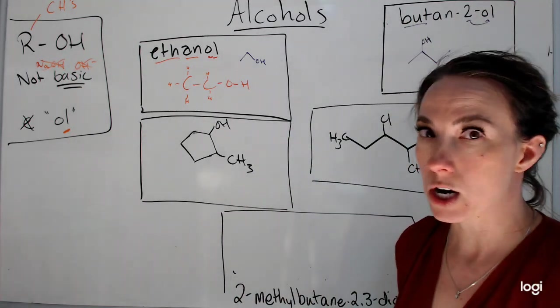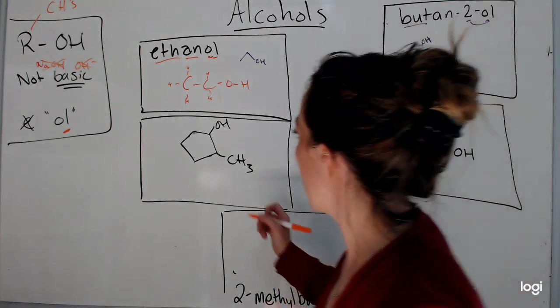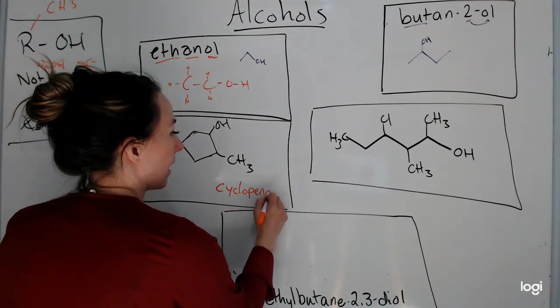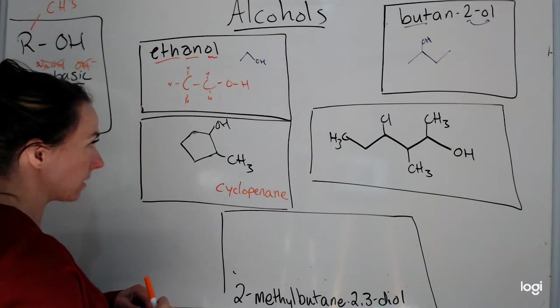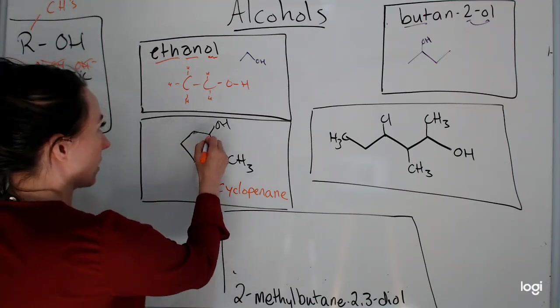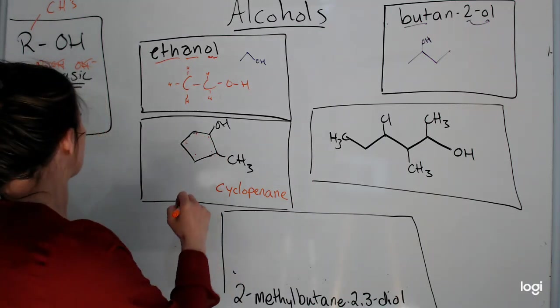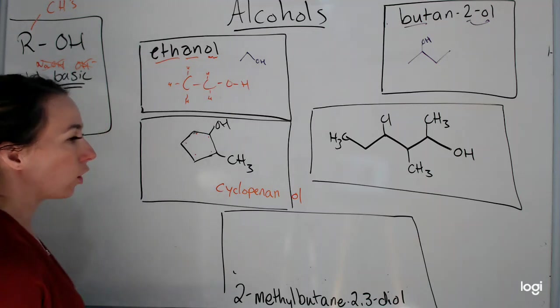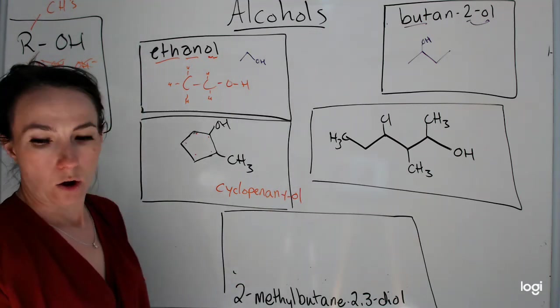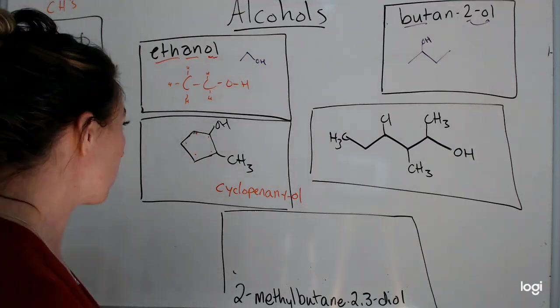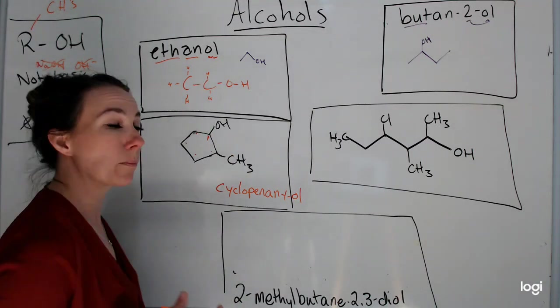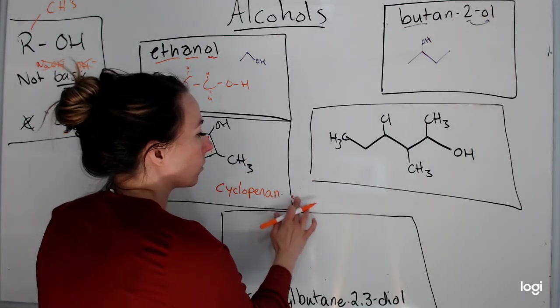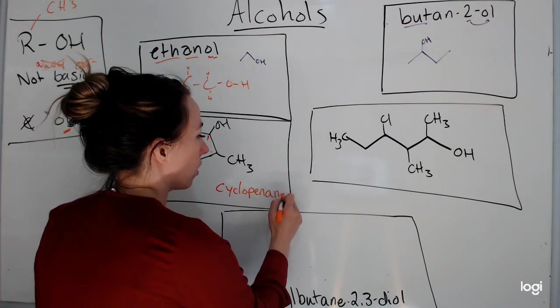So here's some examples from your notebook. Here I have cyclopentane. I'm supposed to drop the E and add OL for my alcohol. You can choose to put a 1 in there or not. It's best practice that we don't. We don't usually put the 1 in, but you understand this is going to be carbon 1 because it's the most important thing on this circle. So I will not. OL.